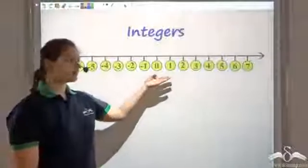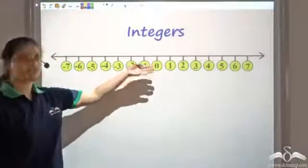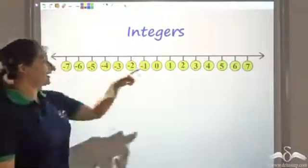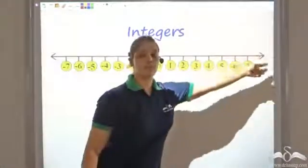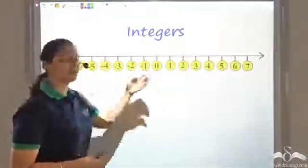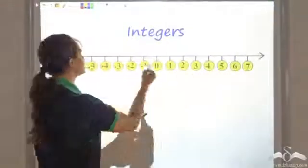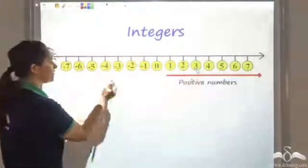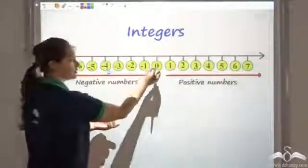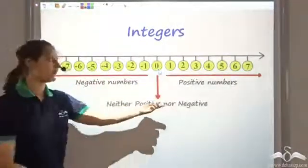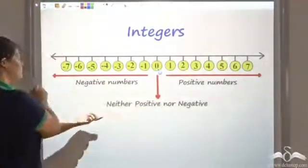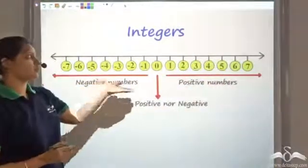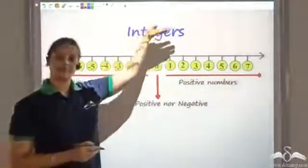This represents the number line showing integers. The number line extends in both directions forever — there are infinite numbers. We have positive numbers, negative numbers, and zero, which is neither positive nor negative. Zero, positive numbers, and negative numbers all come under integers.